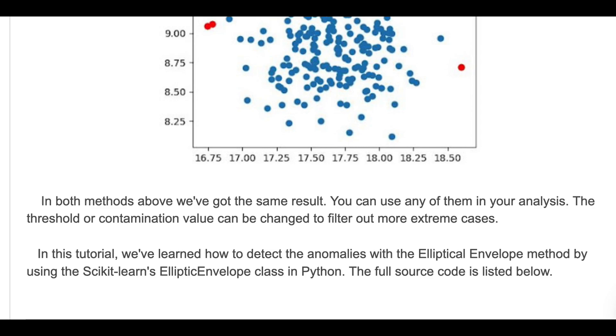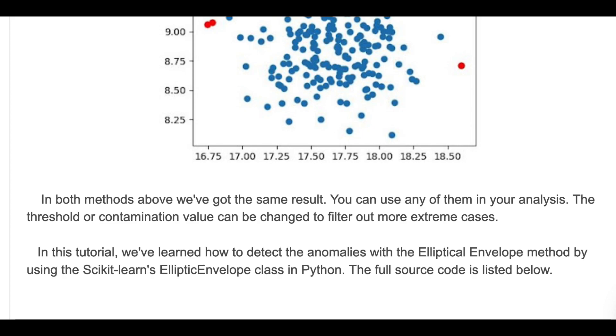In this tutorial, we briefly learned how to detect anomalies with the Elliptic Envelope method by using Scikit-learn's EllipticEnvelope class in Python. Here is the source code.